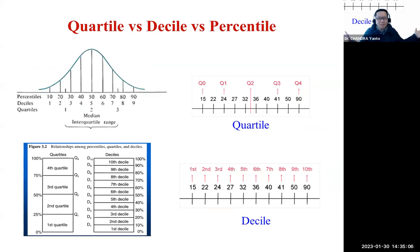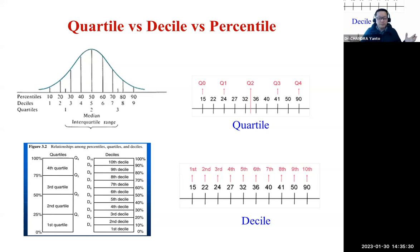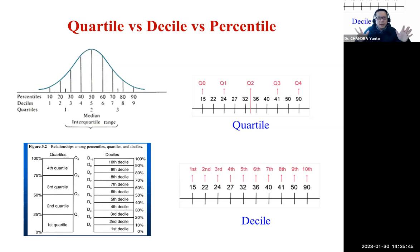Beyond mean, median, and mode, there are some other important descriptive measures. People talk about semesters — dividing the year into two — or quarters, dividing the year into four sections. Similarly in statistics, we have quartiles, which divide your data into four sections. A lot of companies report quarterly earnings — Q1 is January to March, Q2 is April to June, Q3 is July to September, and Q4 is October to December. Statisticians use this same concept of dividing data into quarters.